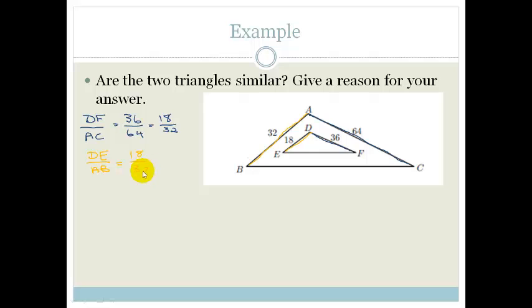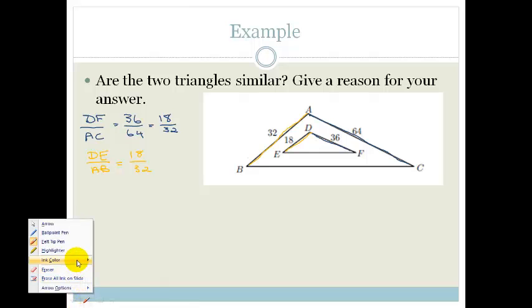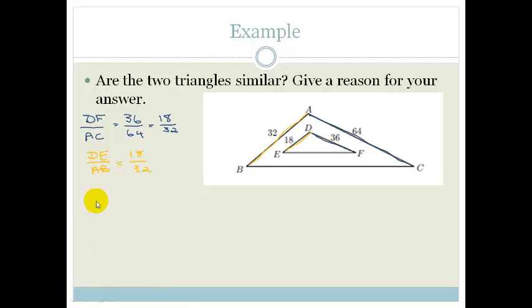Do you see that that would be 18 over 32? 18 over 32. So we can say that yes, these two triangles are similar, and the reason is because their sides are in proportion. So let me just change from this horrible yellow, I shouldn't have chosen it.